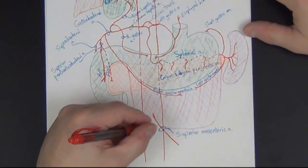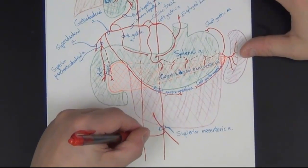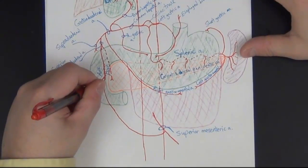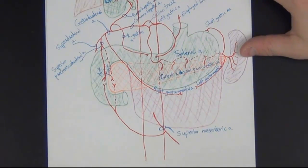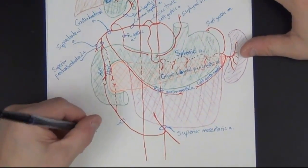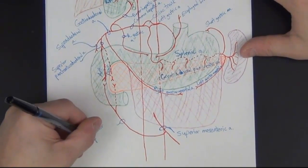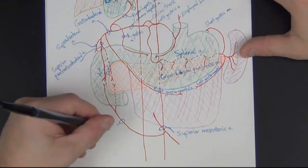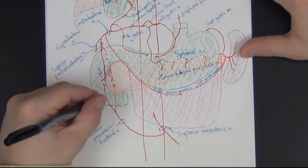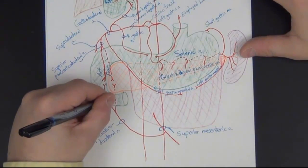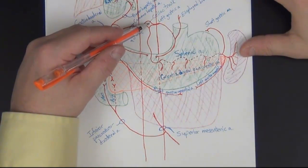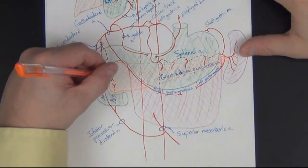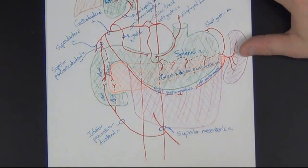One of the early branches of the superior mesenteric artery jumps retrograde toward the duodenum and pancreas, giving off an anterior and a posterior branch. This is the inferior pancreaticoduodenal artery, with anterior inferior and posterior inferior pancreaticoduodenal branches. Importantly, this is where the foregut blood supply from the celiac trunk meets the mid-gut supply from the superior mesenteric artery — an area of anastomosis that can be critical if any of these vessels become blocked.